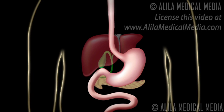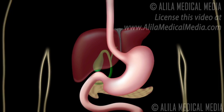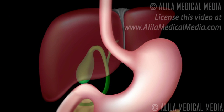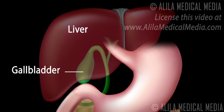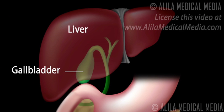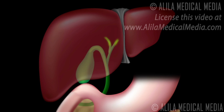The gallbladder is a small sac located underneath the liver. The gallbladder serves to store and concentrate bile. Bile is a yellowish-green fluid secreted by the liver and contains bile acids which aid in fat digestion and absorption.